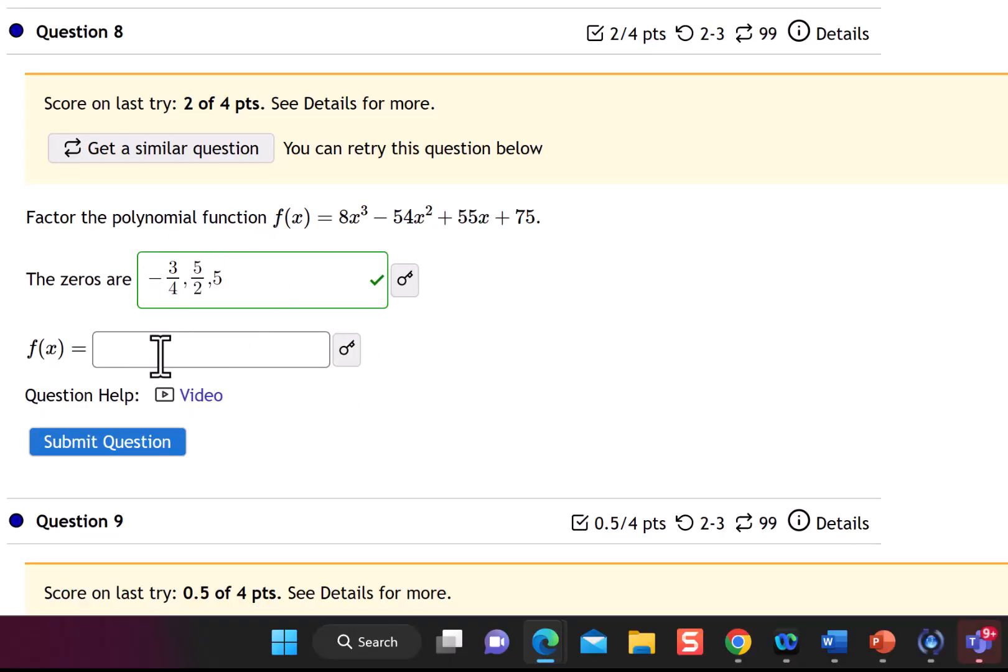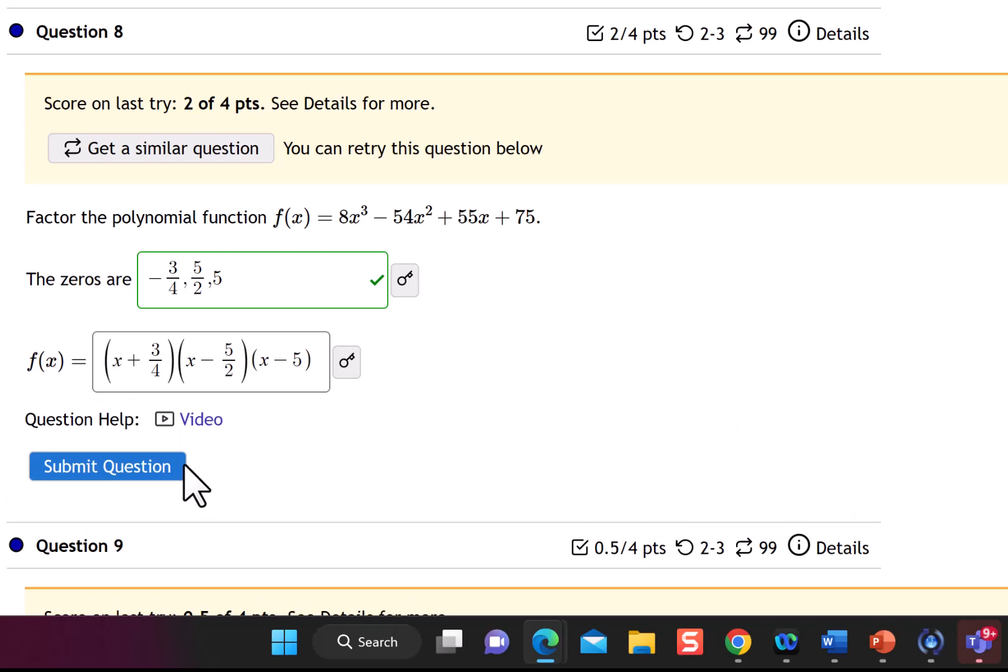Now we want to move on to writing the polynomial in factor form. When you're putting in factor form, you want to flip around the sign of your individual factor. So instead of negative 3 fourths, we put positive 3 fourths. Instead of 5 halves, we put negative 5 halves. And then instead of 5, we put negative 5. So let's submit it. And notice that we got it wrong.